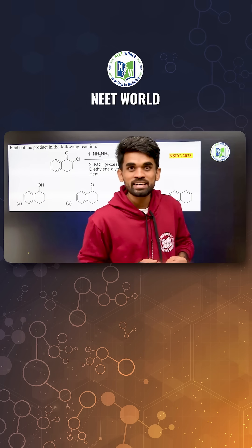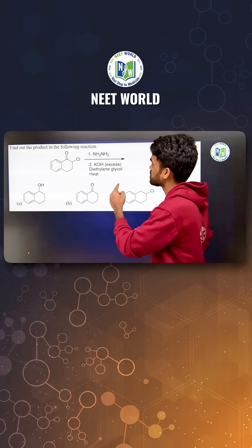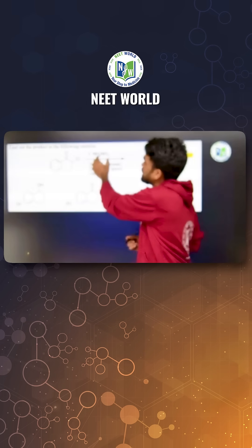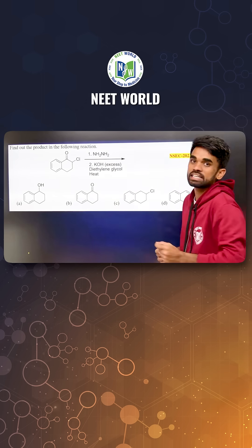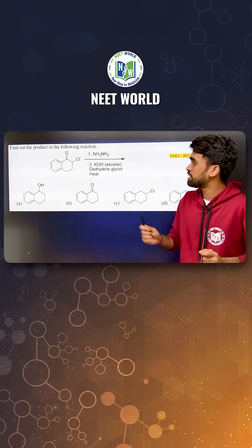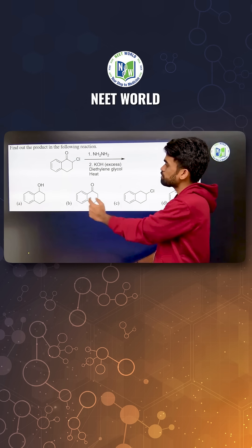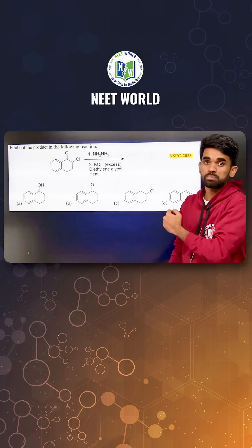Preparing for NSEC, look at this question. The given substrate is treated with hydrazine in KOH, which is in excess quantity. What is the product from the four options?